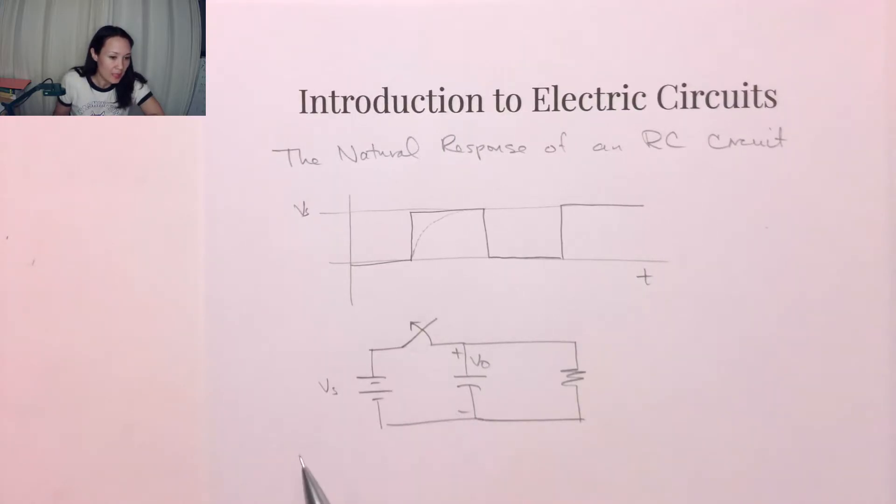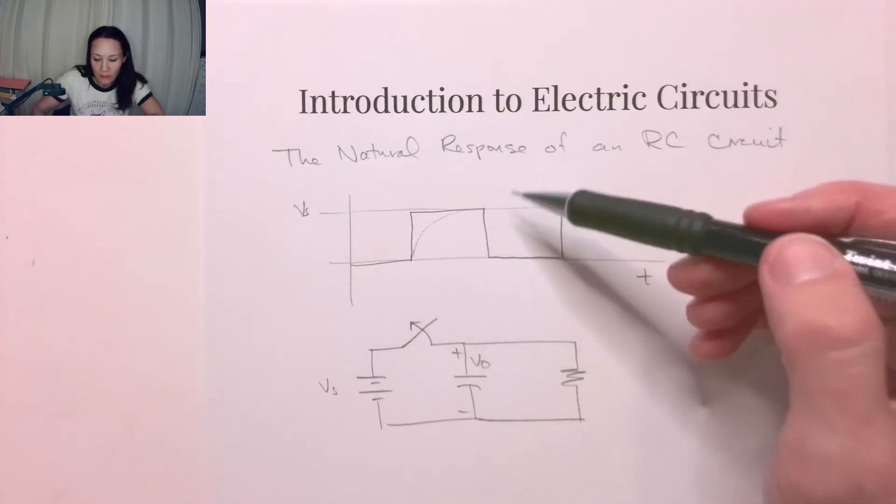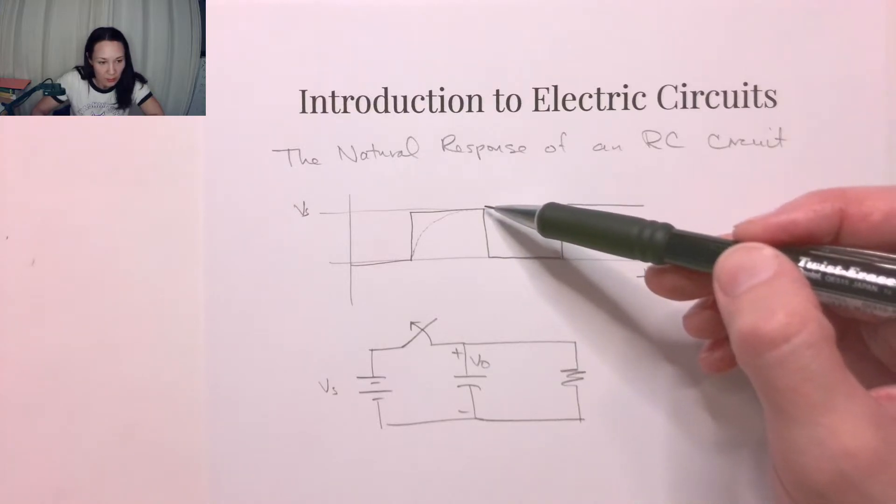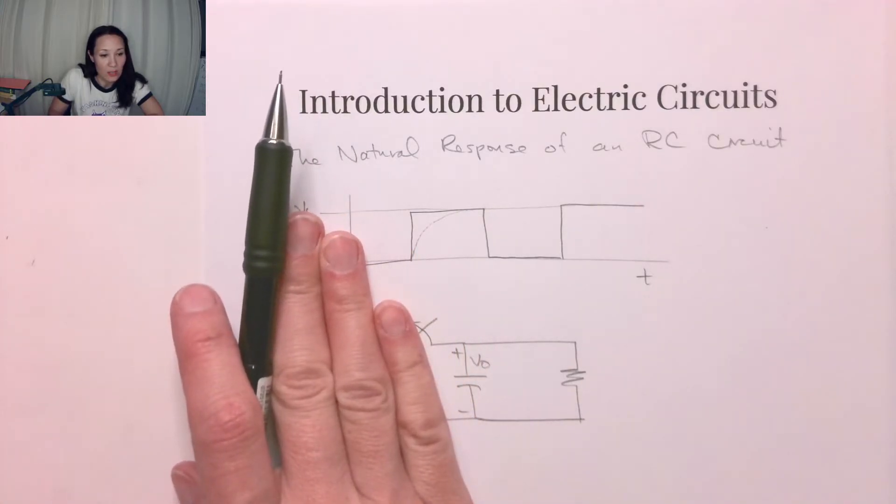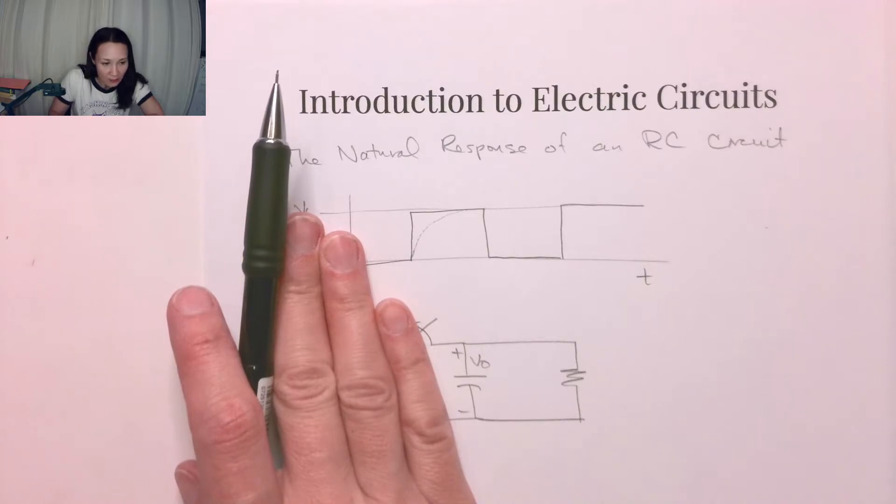If you plotted our voltage source, that would be right here. All of a sudden, this is going to fall to zero because the switch opens, removing this branch of the circuit. Now we just have a source-free RC circuit.